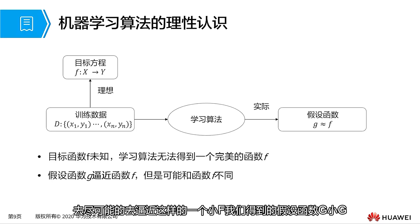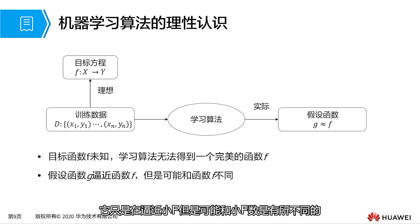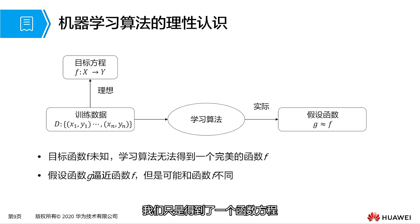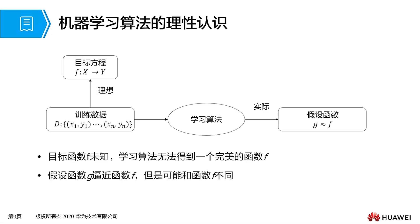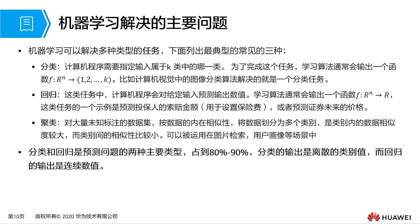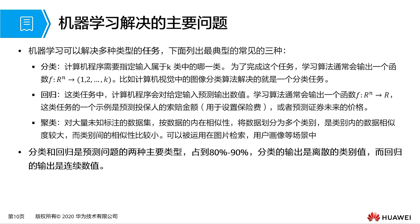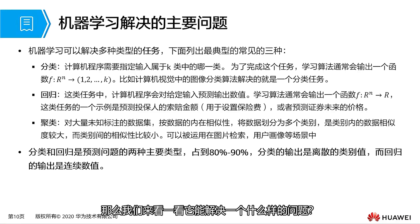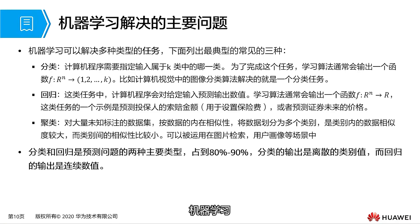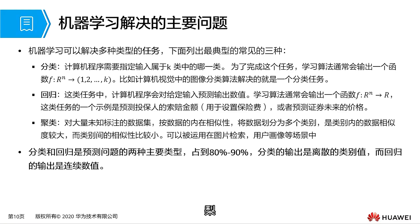What are the main problems that machine learning solves? The three most typical problems are classification, regression, and clustering. We are all very familiar with classification tasks, such as classifying apples, pears, boys, and girls. For computer programs, we need to specify which category an input belongs to — in other words, give it a label. Please pay special attention to the concept of labels, because in subsequent machine learning and deep learning studies, you will often encounter this concept, which indicates which category something belongs to.